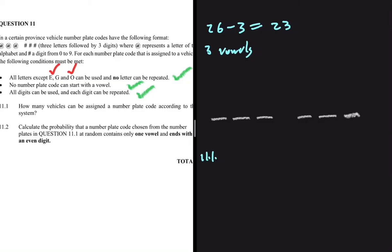The second condition states that no number plate can start with a vowel. So without the vowels, the first position has 20 possible options — we have 23 letters but cannot use any of the three remaining vowels, leaving 20 letters for the first position. For the second position, out of 23 letters we have used one, leaving 22.